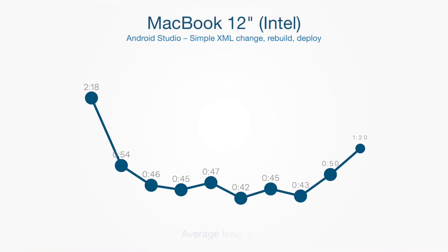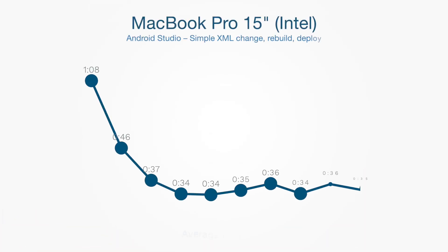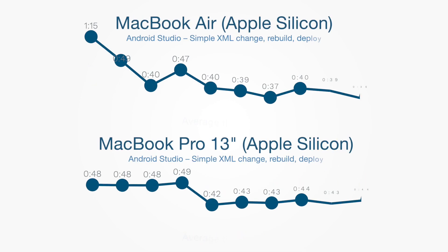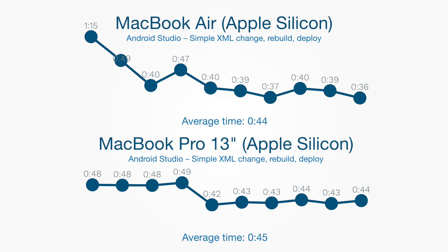I also simulated UI debugging by changing a few small parameters in layout files and deploying to the device, again repeated 10 times. MacBook 12 started at around 45 seconds but the time increased toward the end — I believe because this test ran right after the previous one and the MacBook didn't have time to cool down, hitting the throttling line. MacBook Pro 15 kept it at around 35 seconds with no fans. Both MacBook Air and MacBook Pro 13 were around 40 seconds, but the Air was a few seconds faster.